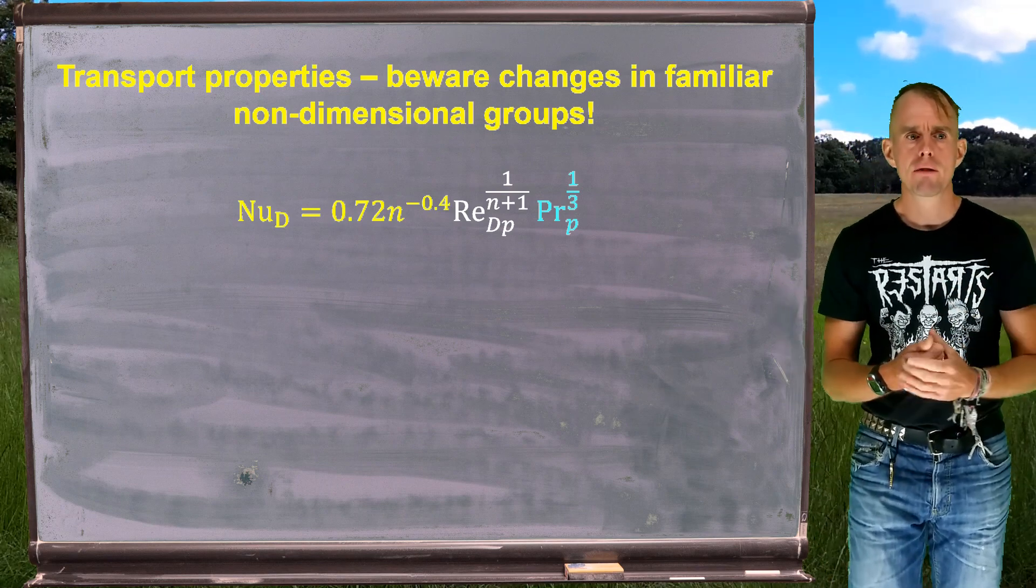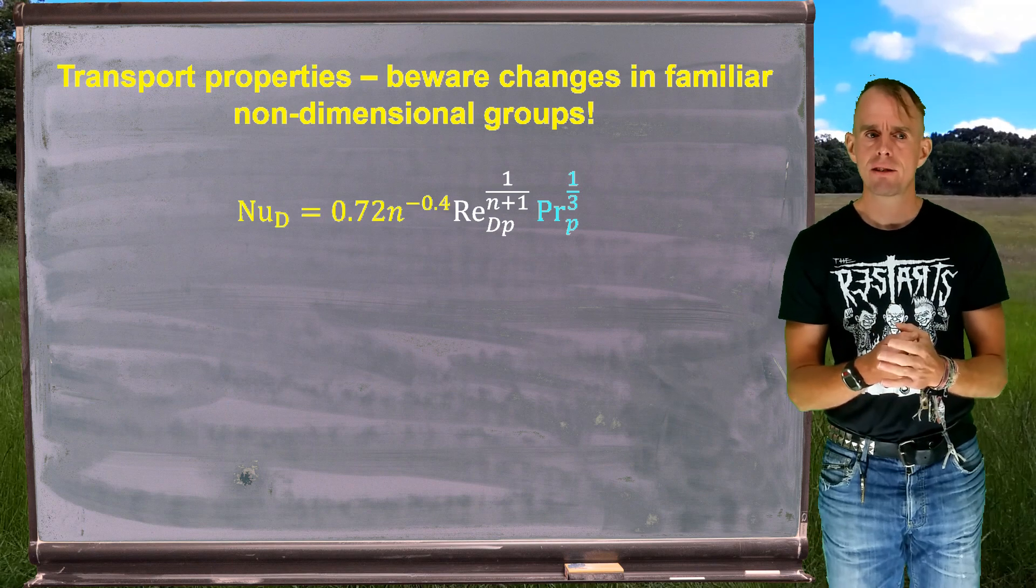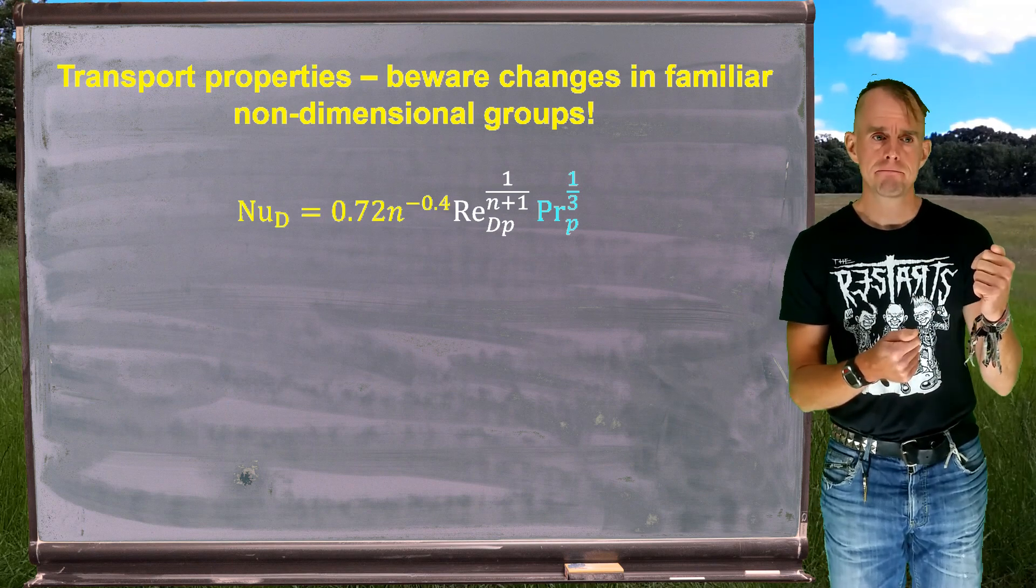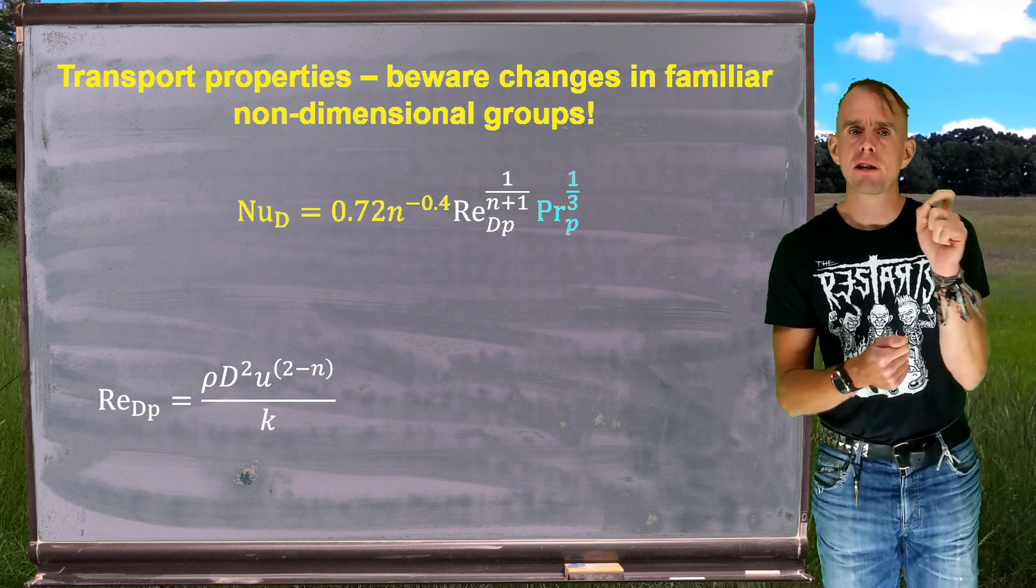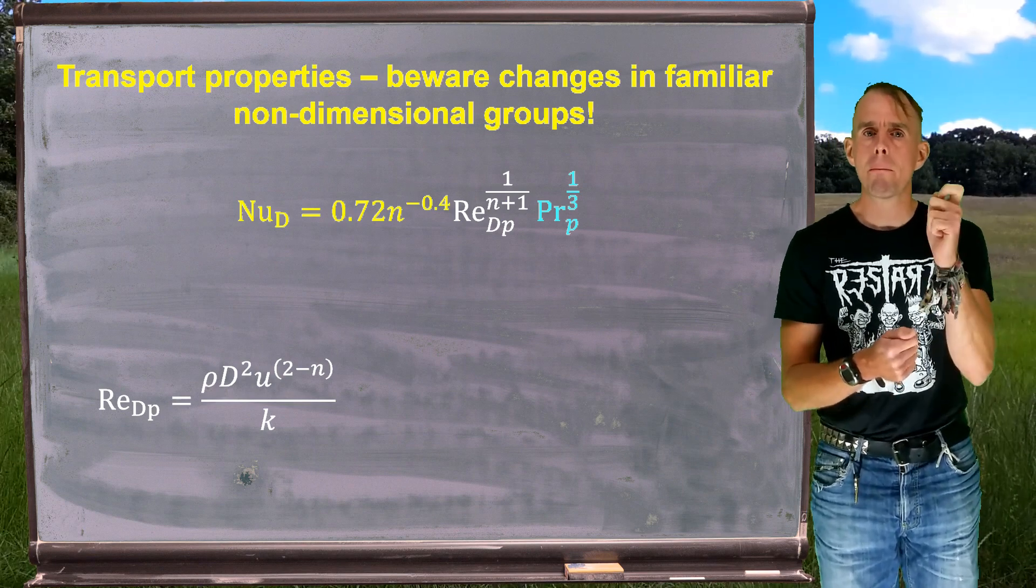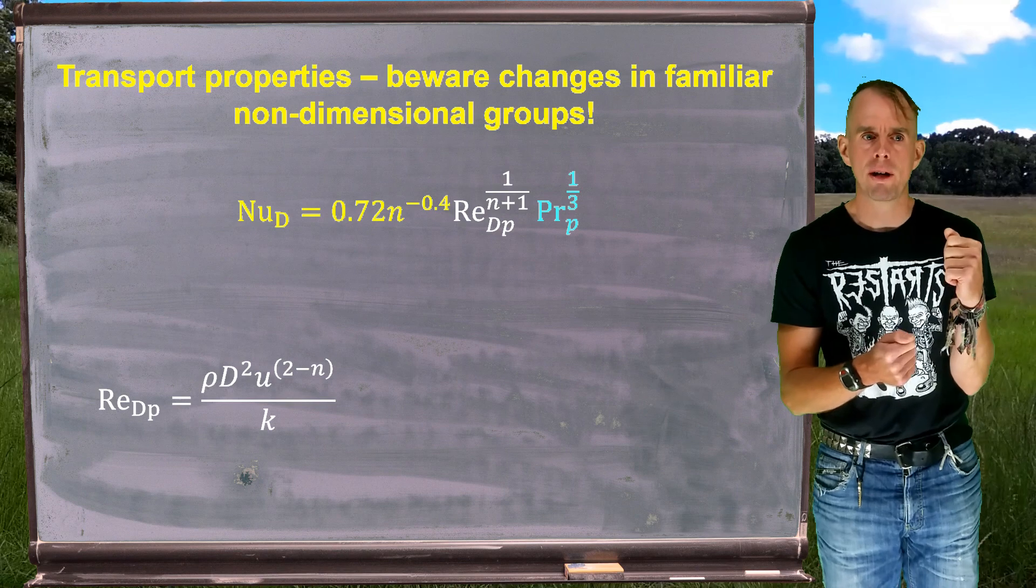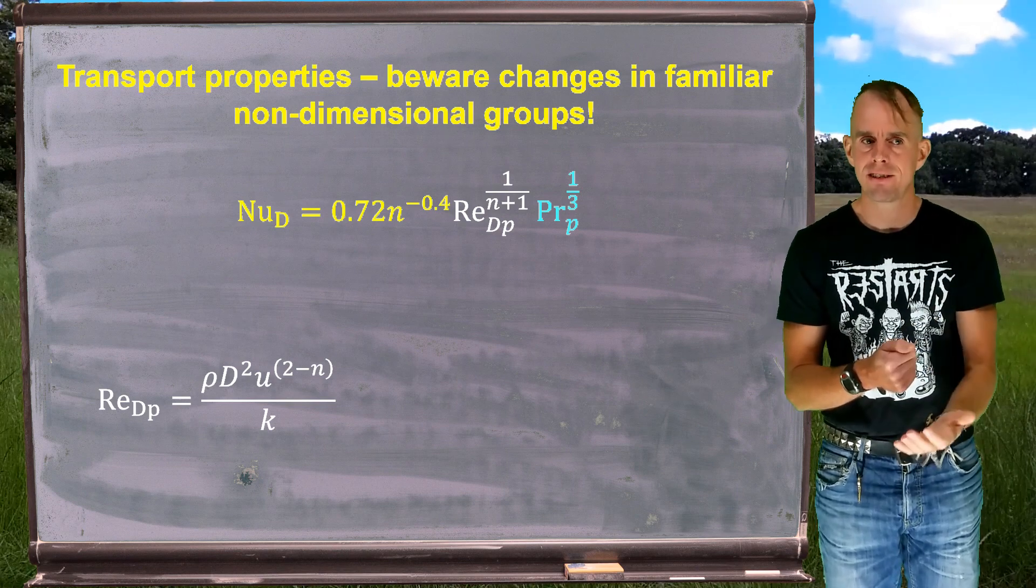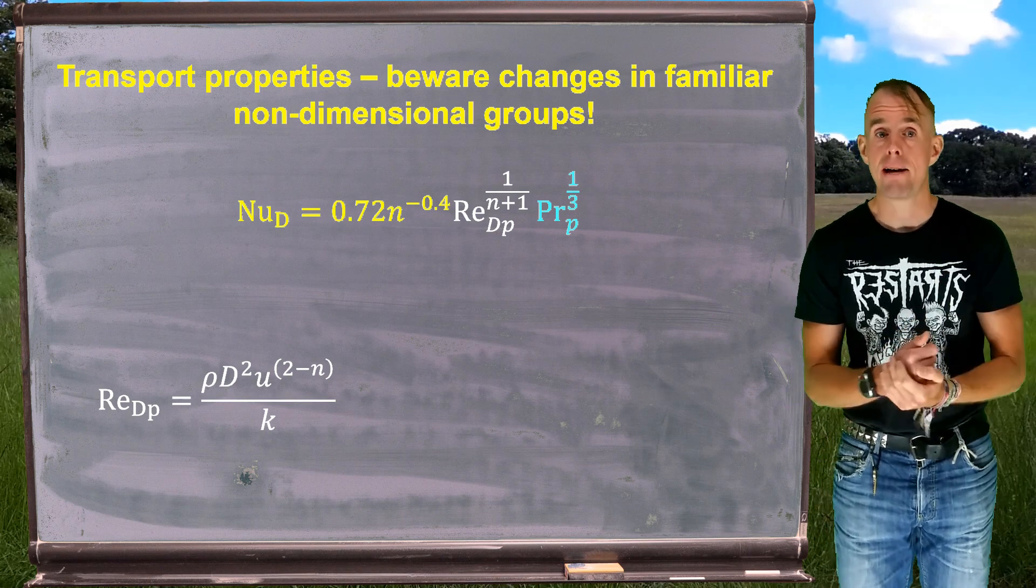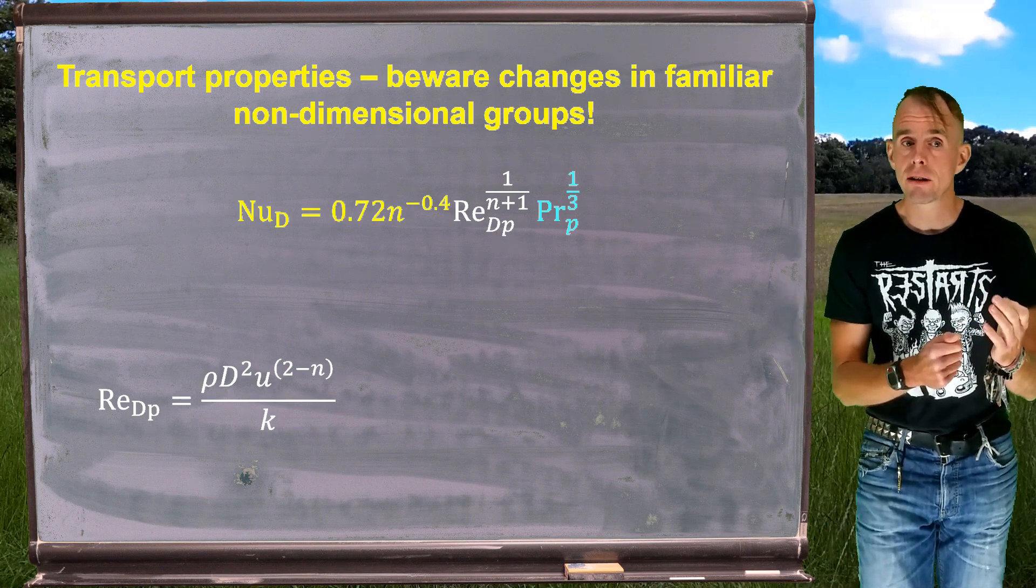So the Reynolds number in this case has our density in. It has a d squared term in. It has our velocity raised to 2 minus n. n is our power law index. And in the denominator, we have k, our consistency index. So beware. Let's look at our Prandtl number. And again, we can see within our Prandtl number, we have our Reynolds number featuring raised to powers involving the power law index.